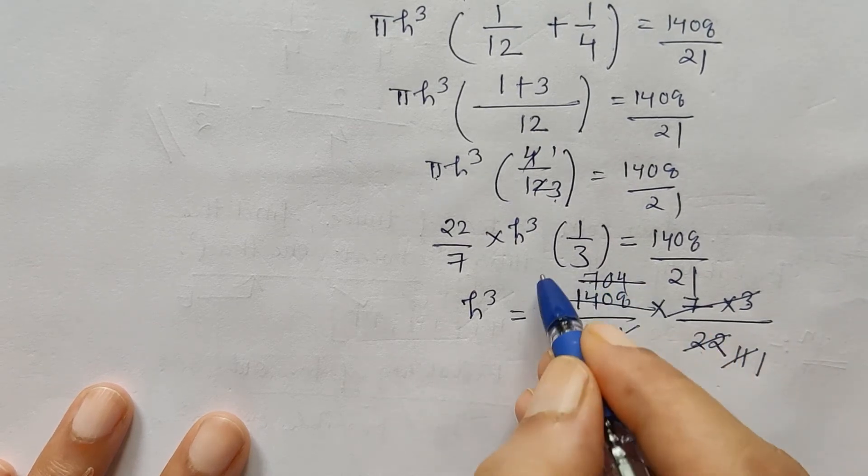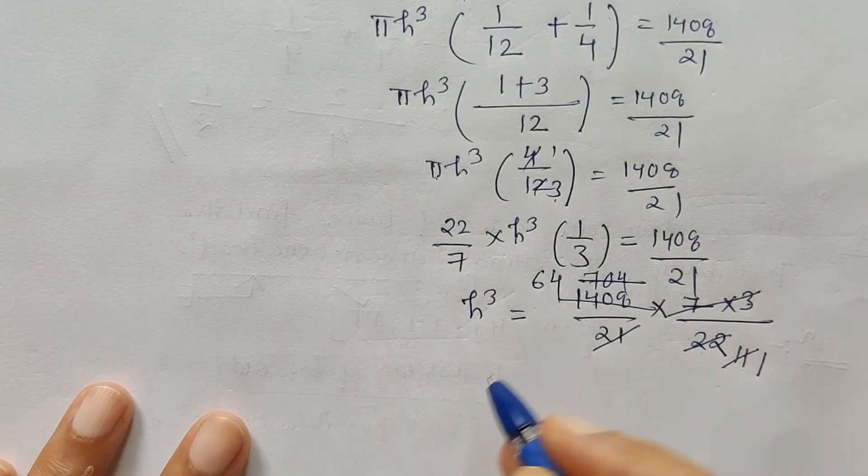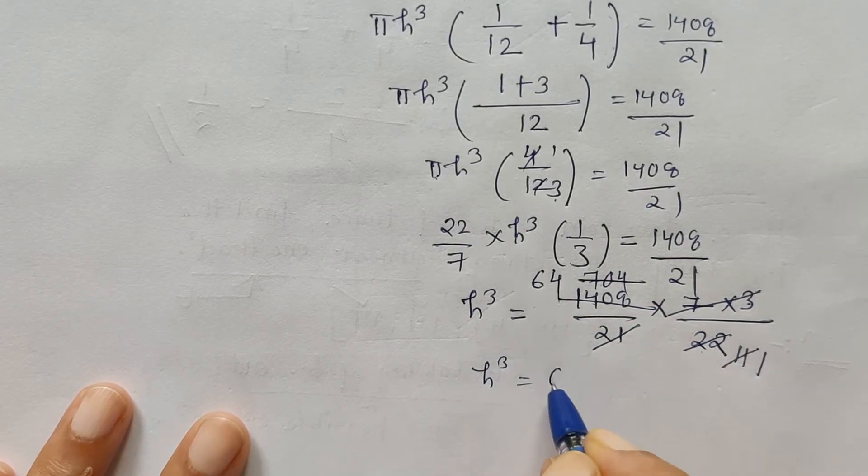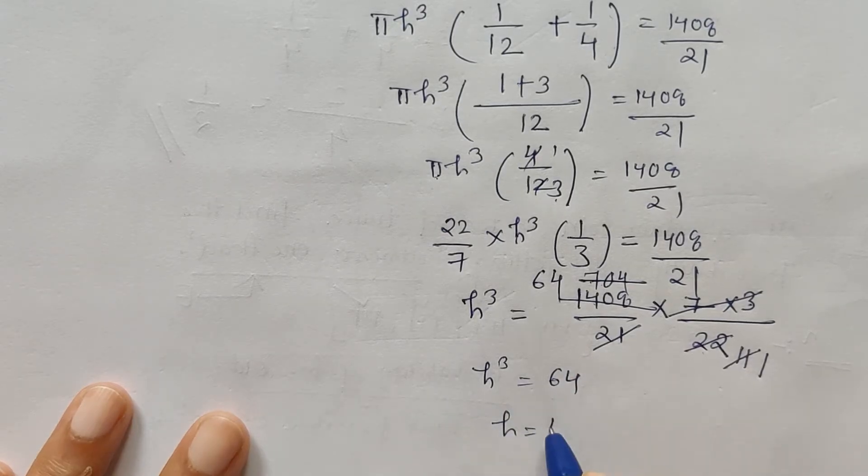11, 1 is 11, 11, 6 is 66, 4 is the remainder, 4 and 4 makes it 44, 11, 4 is 44. So h cube is 64 and the cube root of 64 is 4.